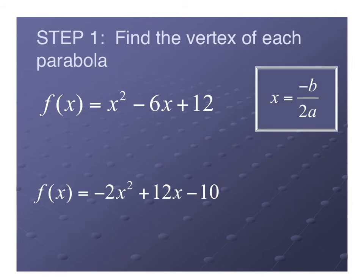So let's find our vertex of each of these parabolas. What I like to do first is write down a, b, and c. That helps me stay organized. So a is 1 because there's really nothing out in front here, which means it's a 1. b is negative 6, and c is 12.